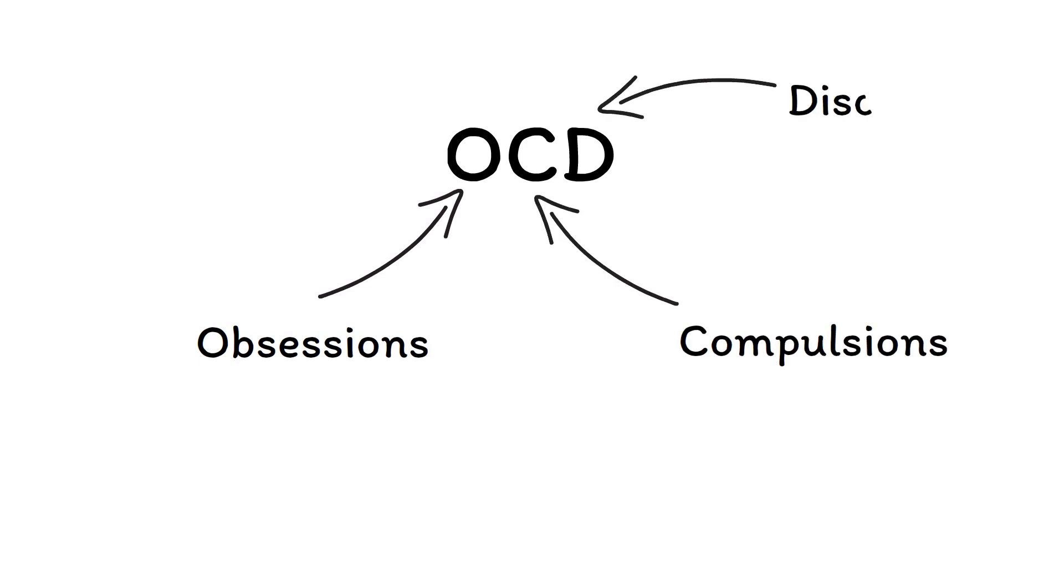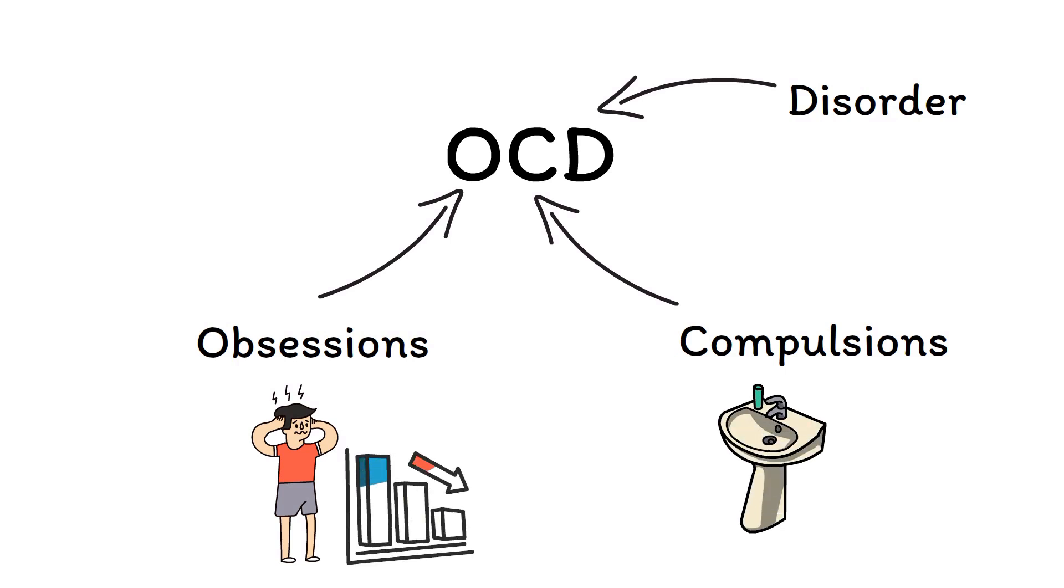Cases of OCD are defined by the presence of obsessions and compulsions that lead to significant disorder and dysfunction. Obsessions are intrusive and unwanted thoughts that are often disturbing and unpleasant, while compulsions are specific behaviors that help to reduce the distress caused by obsessions.